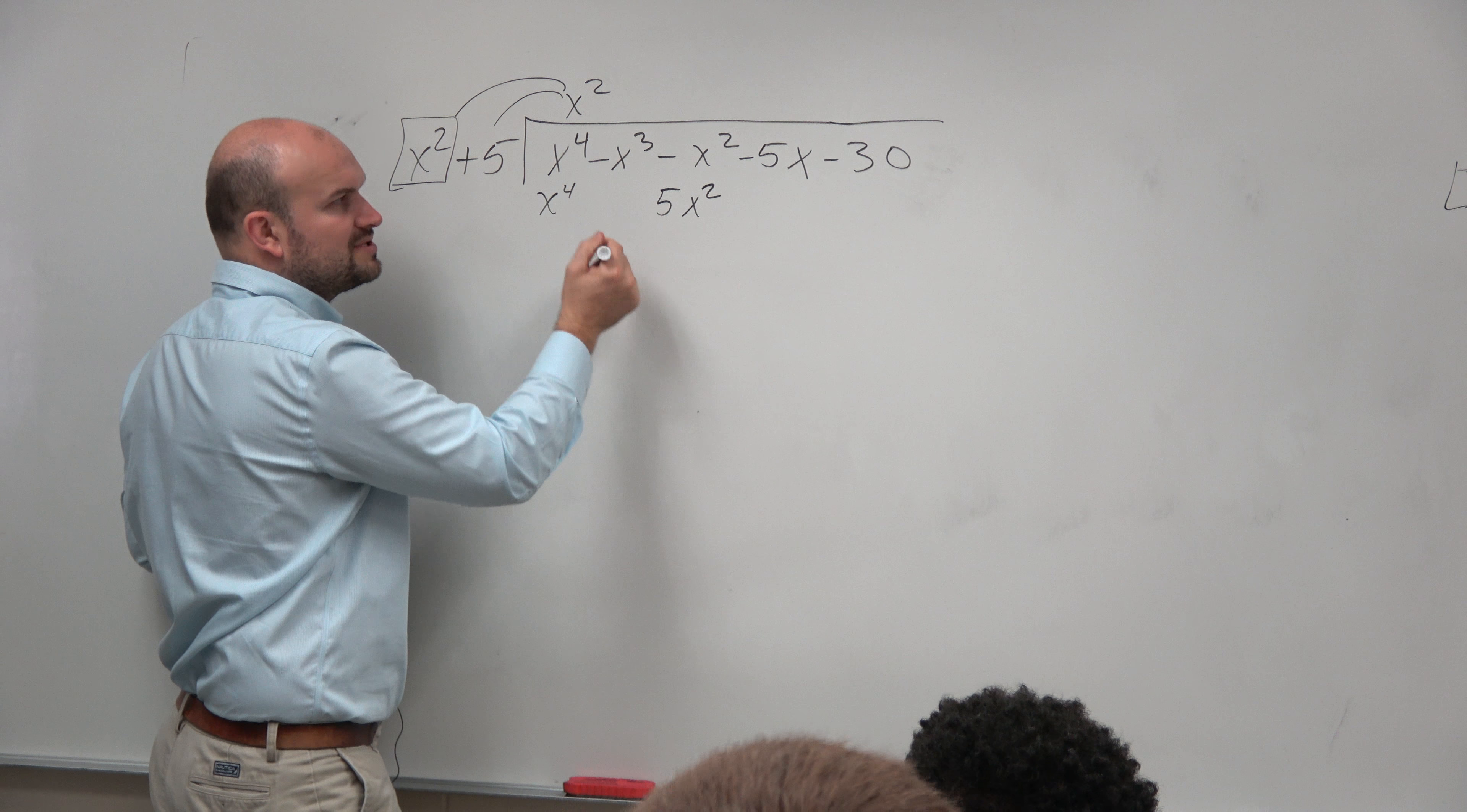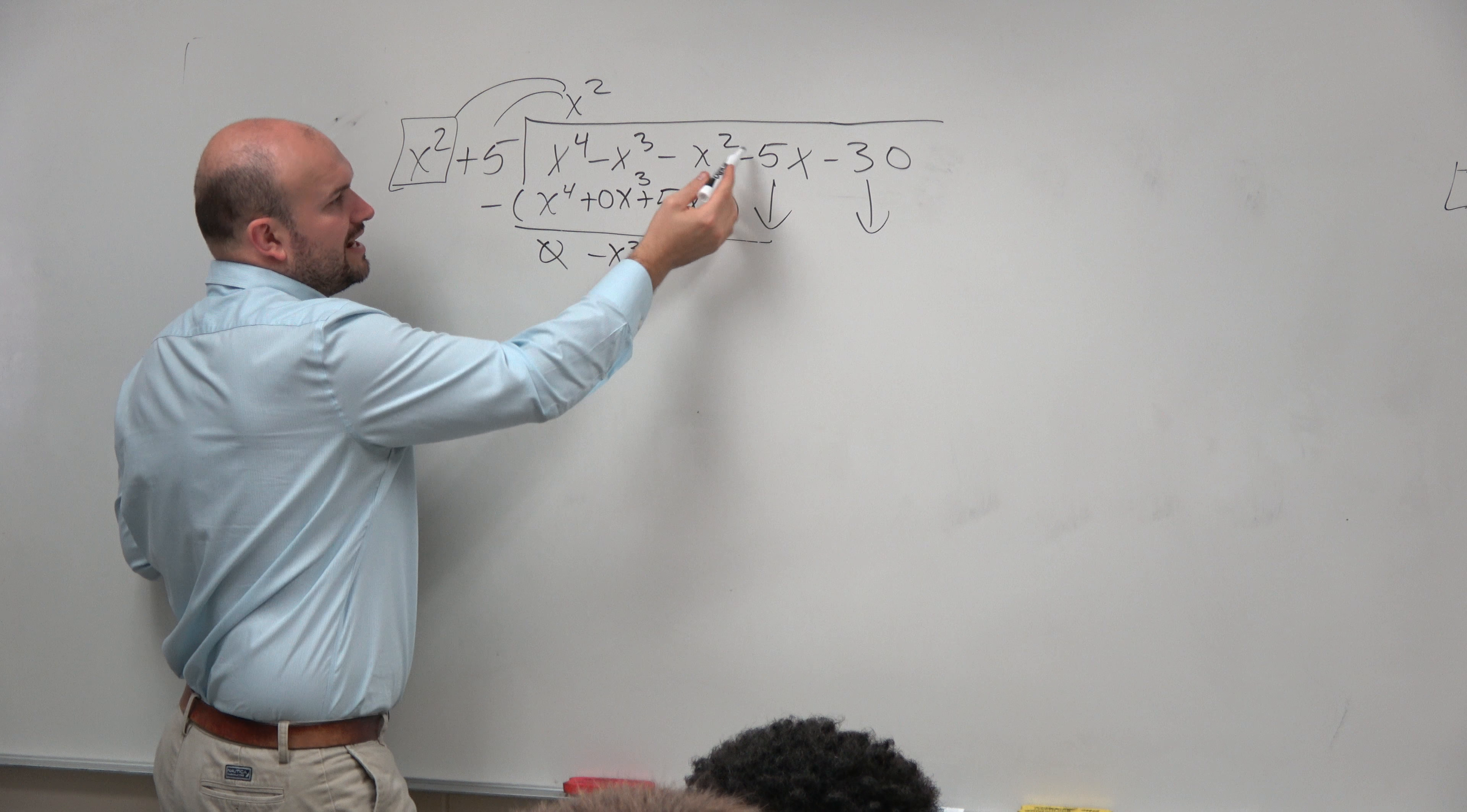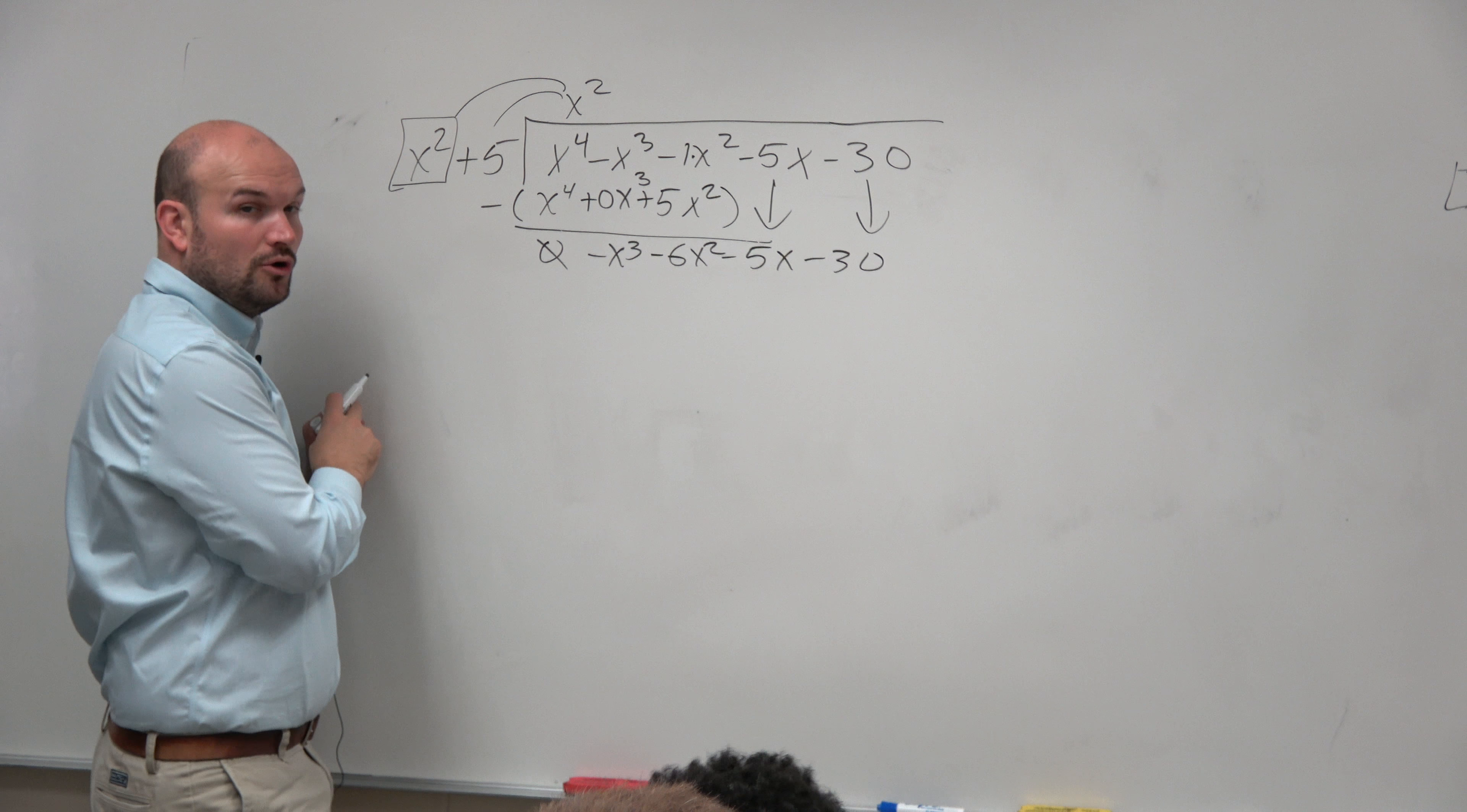So then it begs the question, well, what the heck do I do here? Well, I remember I told you guys, you can either bring it down, or what makes sense is to just use a 0x cubed. Because what's really 0x cubed? It's really just 0. But it's a good placeholder. So I'm subtracting these rows. x to the fourth minus x to the fourth is just going to be 0. Negative x cubed minus 0x cubed is just negative x cubed. Negative x squared minus 5x squared. You owe me $1, and you borrow 5 more dollars. And then we can just bring down the rest. Now we need to do the whole party all over again. Start with x squared. x squared goes into negative x cubed, negative x times.